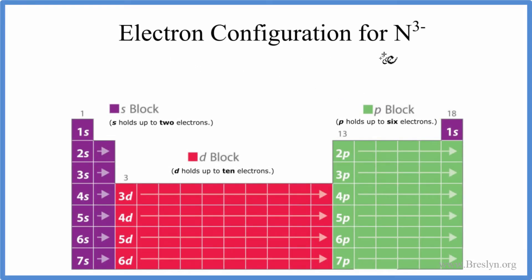To write the electron configuration for N3-, that's called the nitride ion, we first need to write the electron configuration for just regular neutral nitrogen, as it's found on the periodic table.